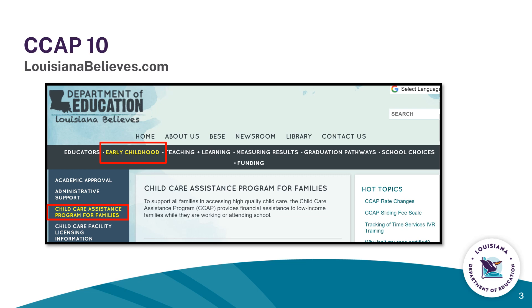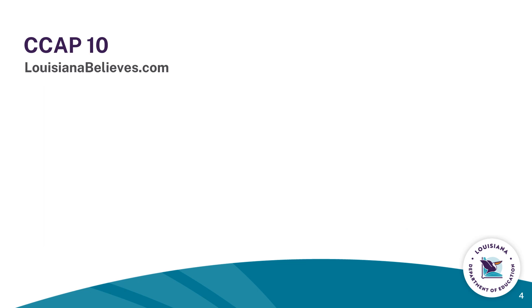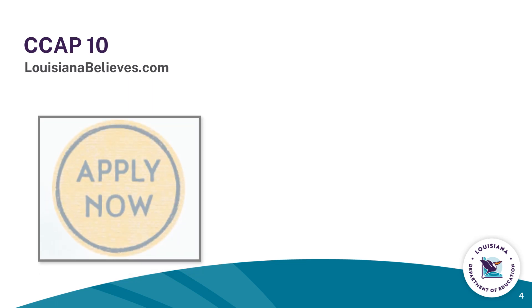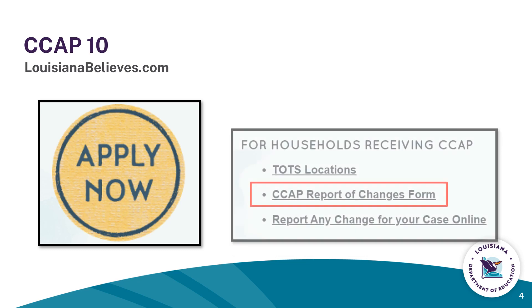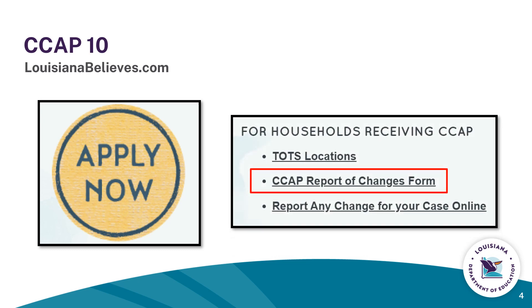You can access the Child Care Assistance Program page on the left-hand menu. Once you have located the Child Care Assistance Program webpage, you can scroll to the Apply Now button to submit a CCAP10 through the portal. If you wish to download a form, you will scroll to the CCAP Report of Changes form link.